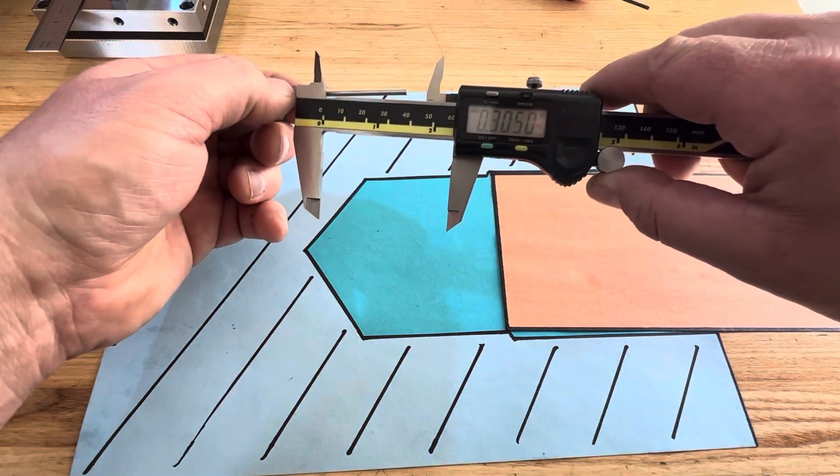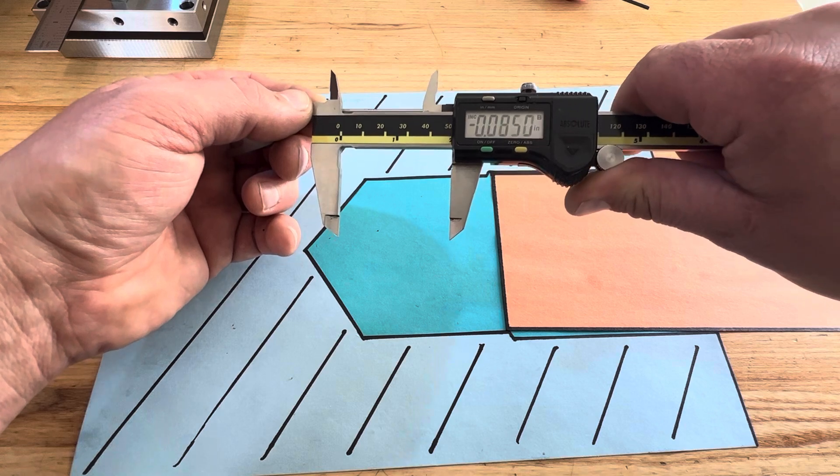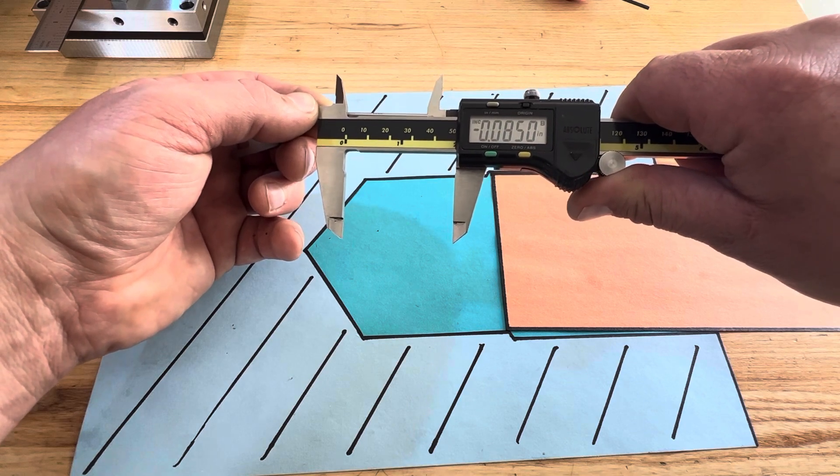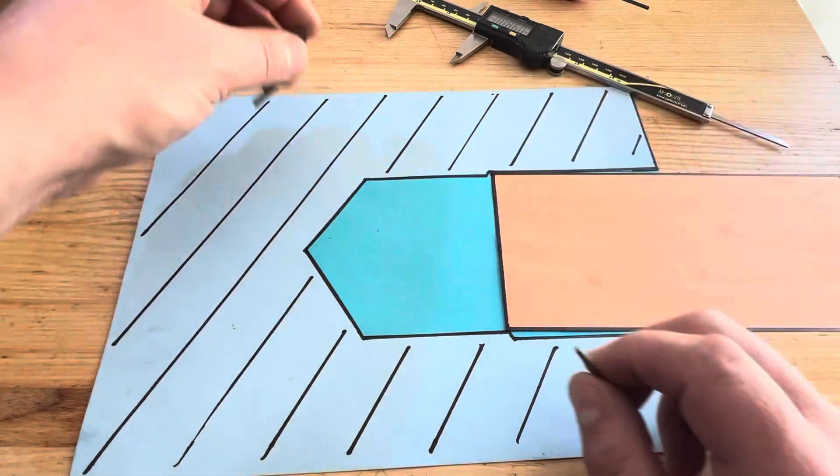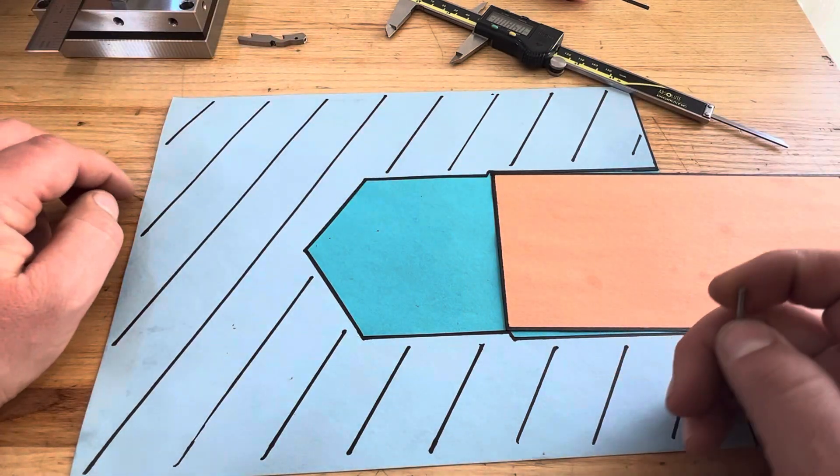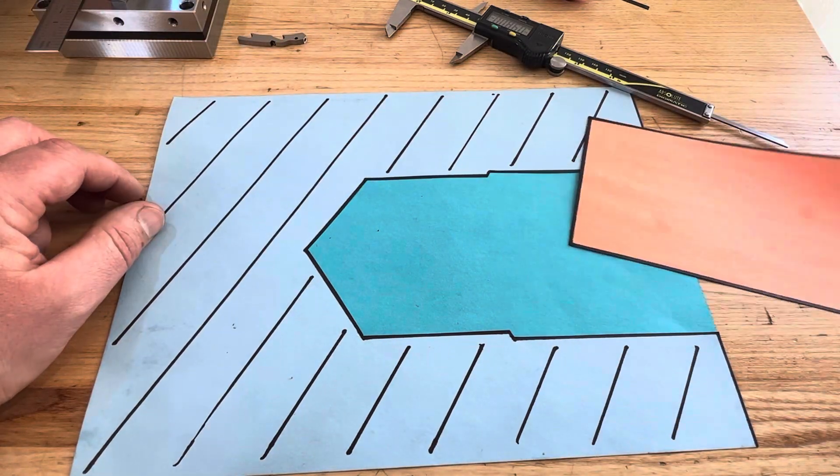Then we simply measure how much is sticking out above the part, and that is the counter bore depth. I use these two tricks quite often with my calipers. I find them very handy and I hope you get some utility out of them. Thank you for watching.